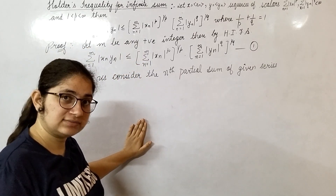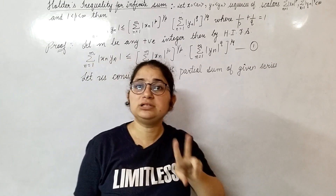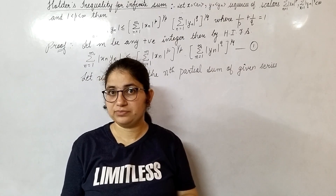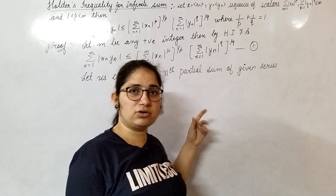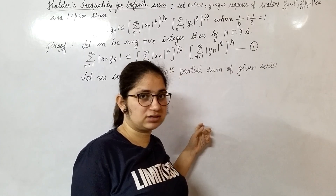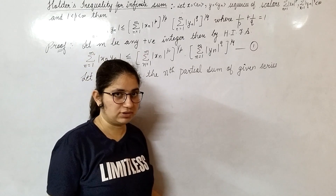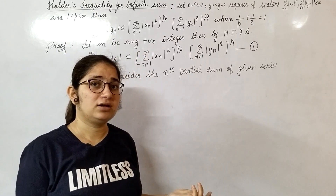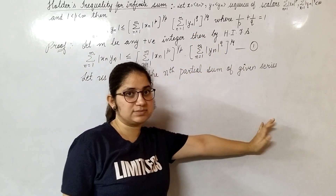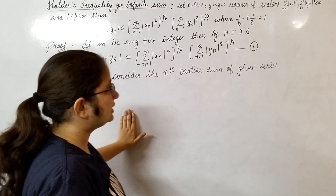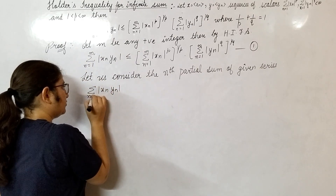Independently, the series (x_n) is bounded, and independently, the series (y_n) is also bounded. If you multiply two bounded sequences, the product will also be bounded. You can verify this by taking an upper bound and lower bound for X and doing the same for Y, then forming their product. If both are independently bounded, their product is also bounded.